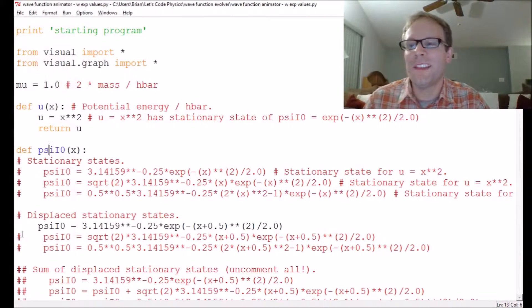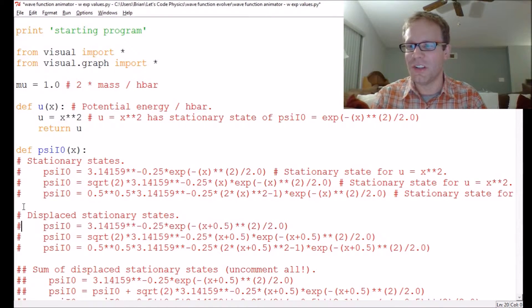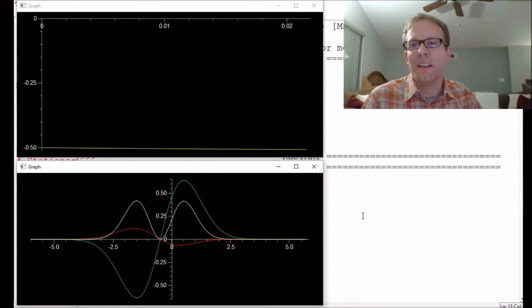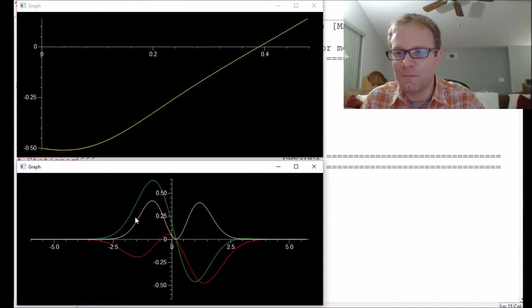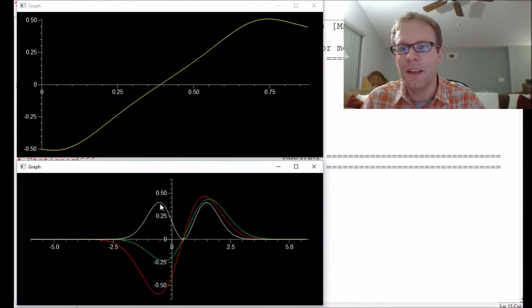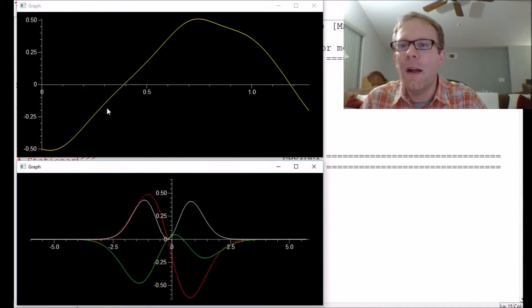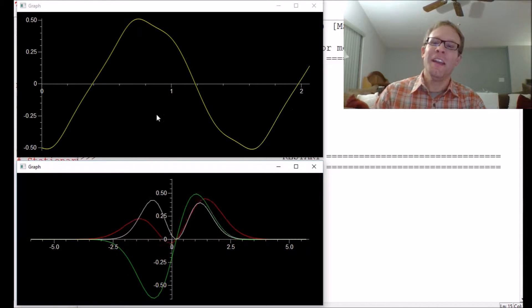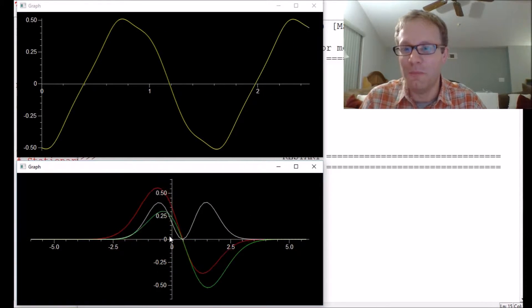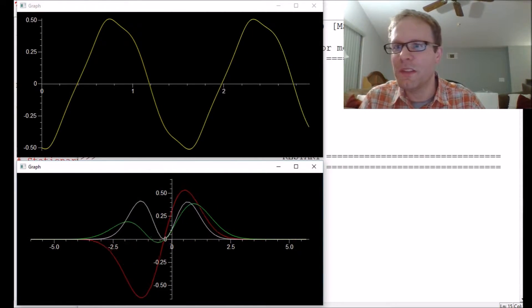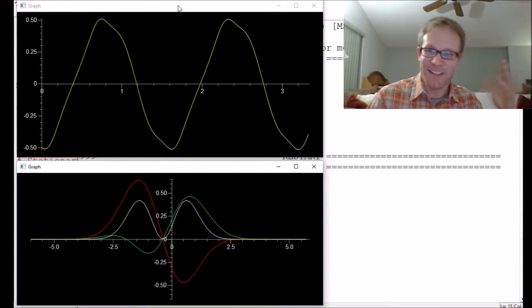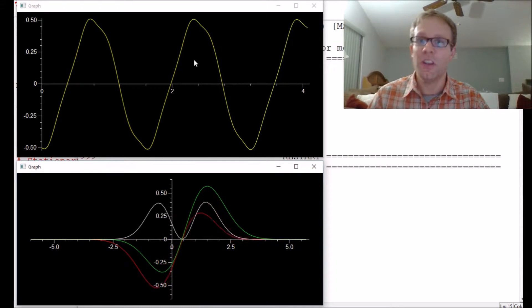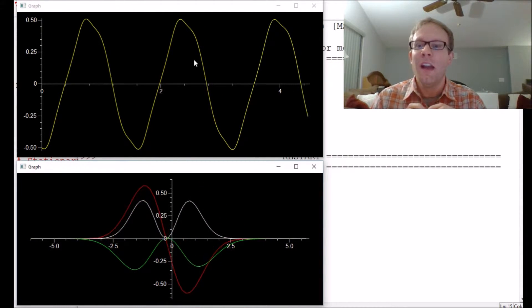Things get more interesting when we make the state more interesting. We had these different displaced stationary states. This next one is the first excited energy level. We've got the two maxima here because we've got a Gaussian multiplied by this linear function. So they are oscillating back and forth just like before. Only this time the thing doesn't quite look like a sine curve because the sine curve doesn't have this little kink in it. We end up with this not-sine pattern, but it's still oscillating.